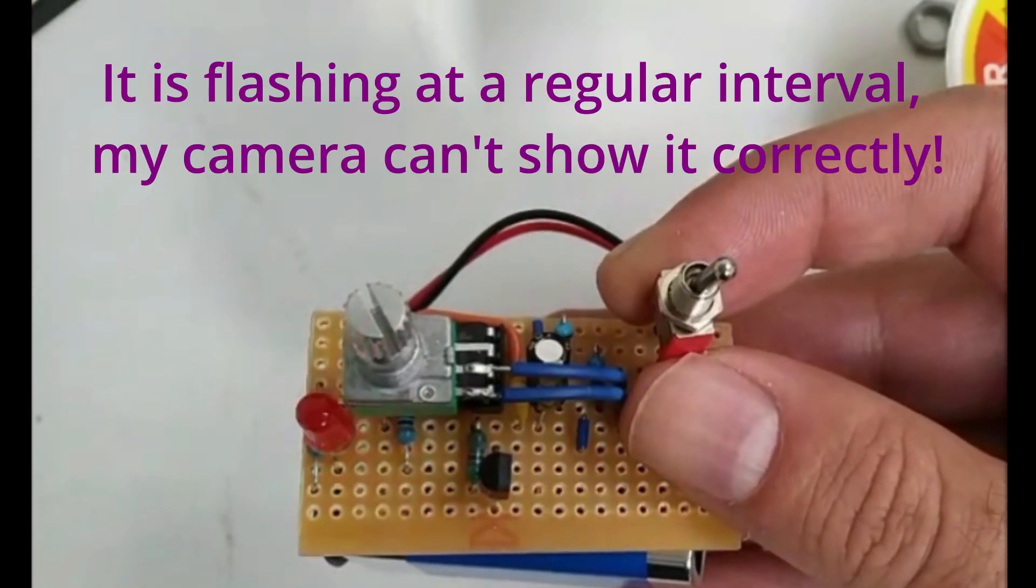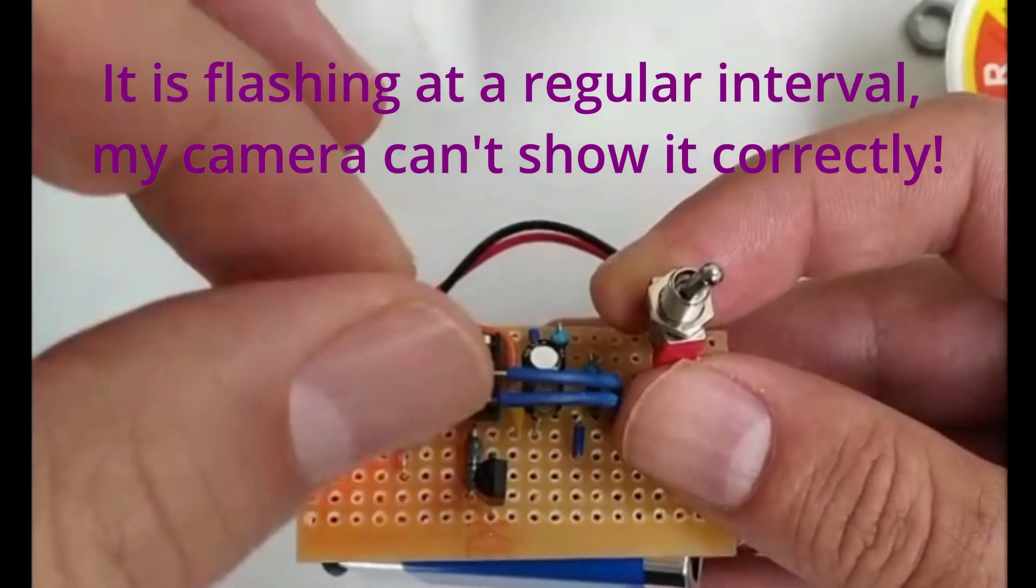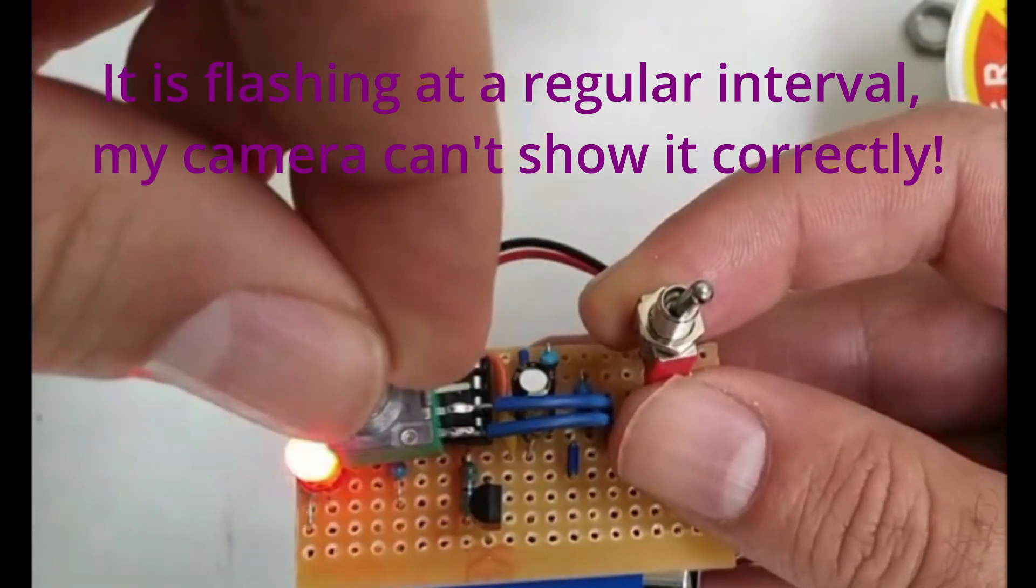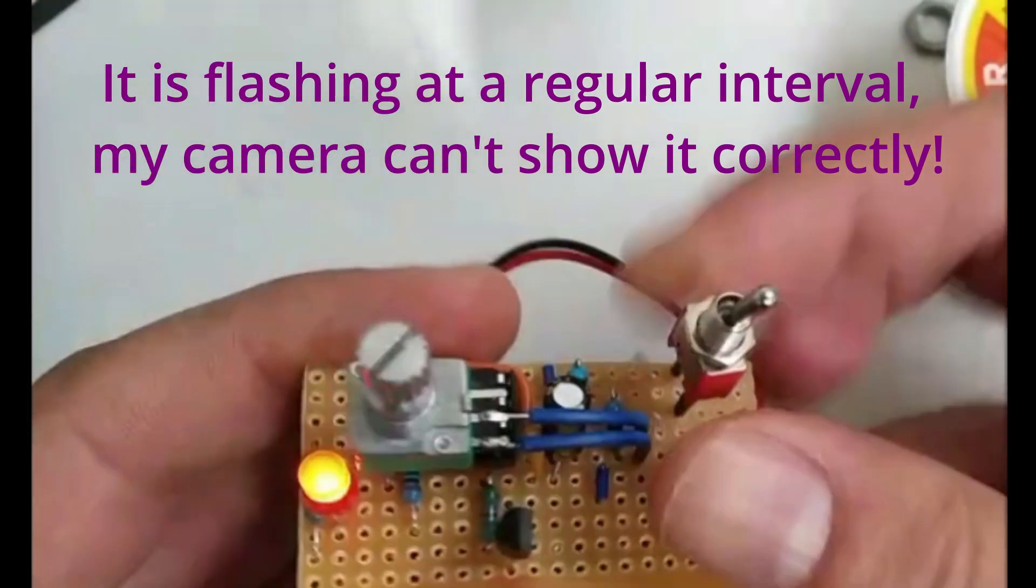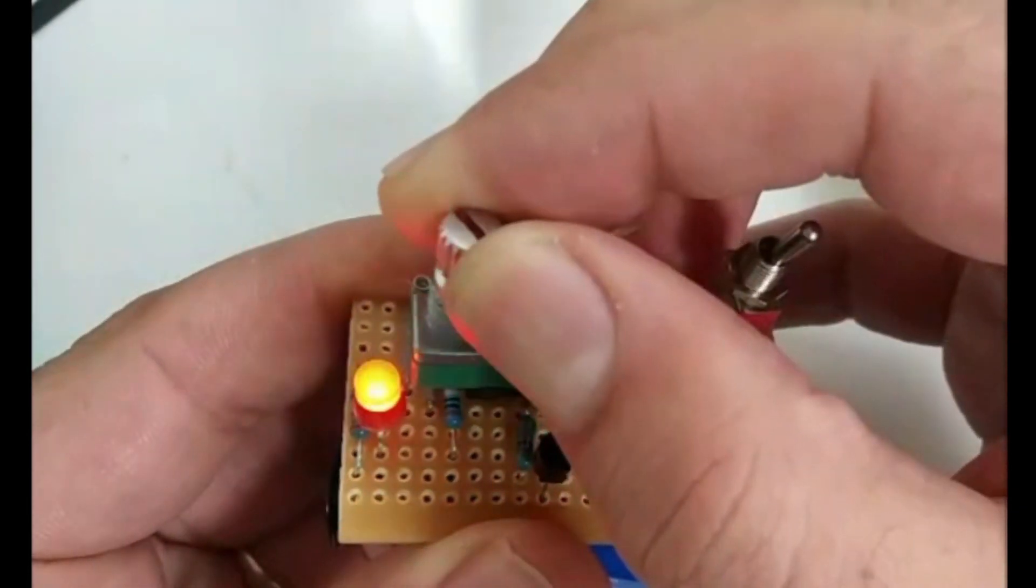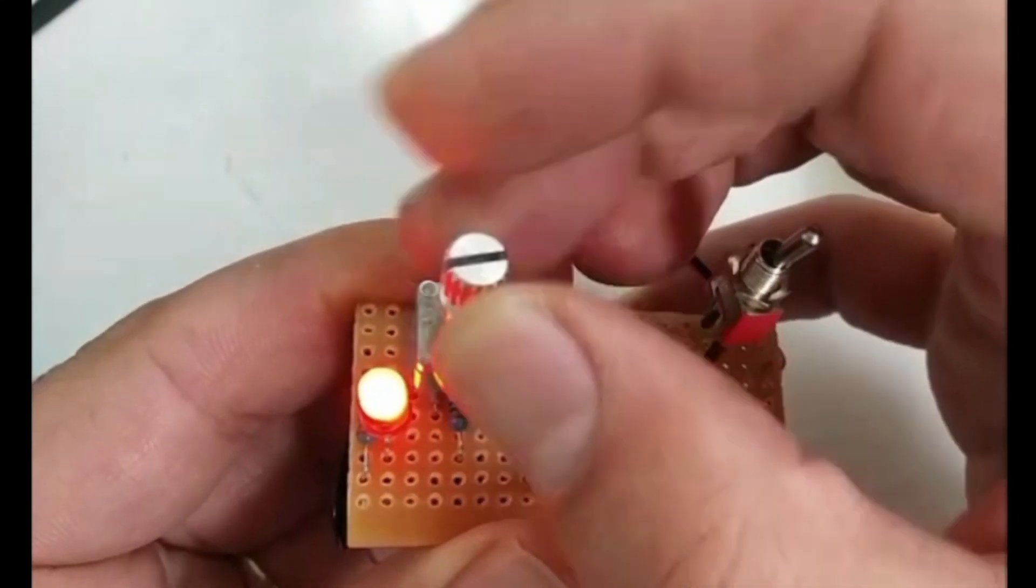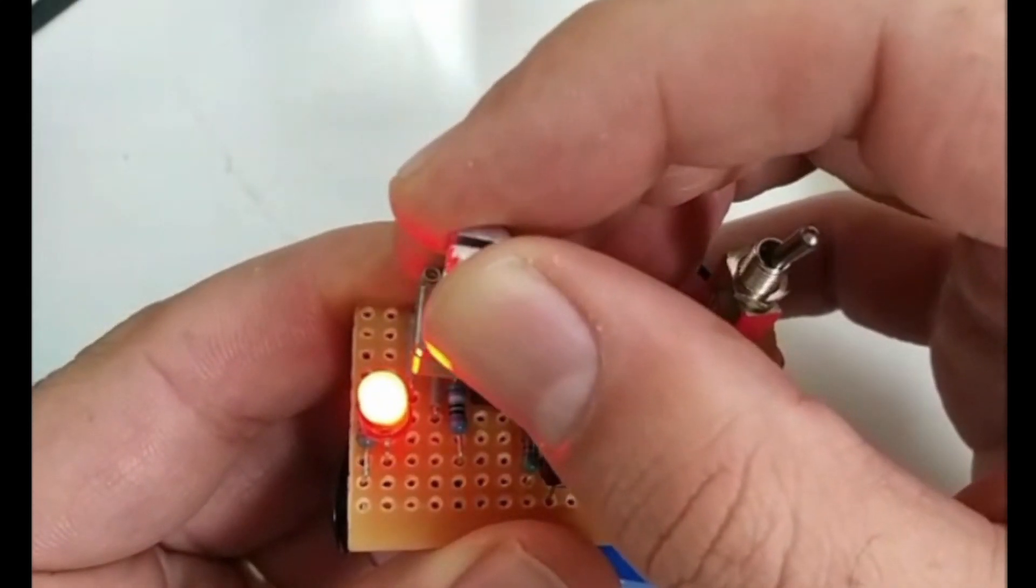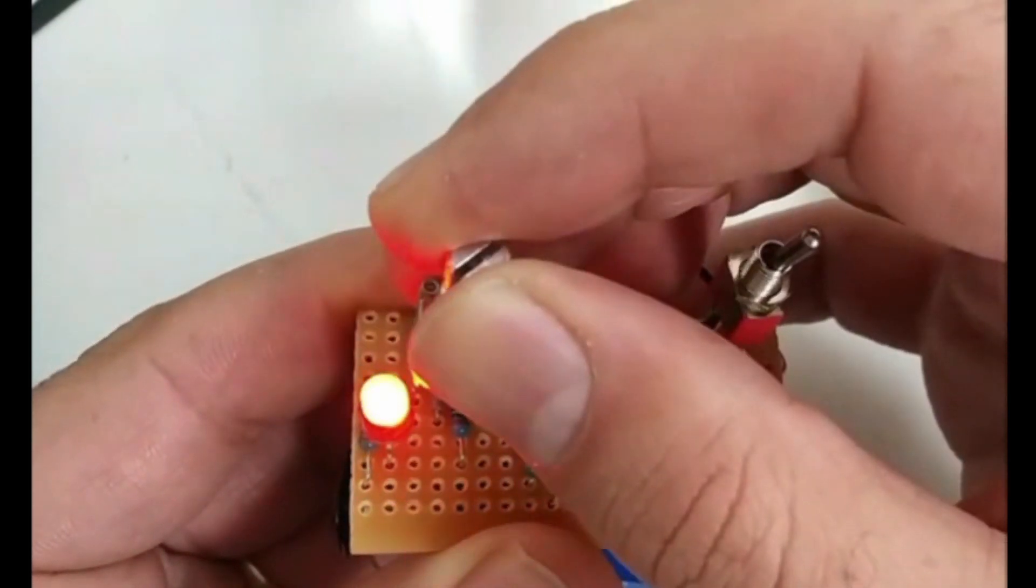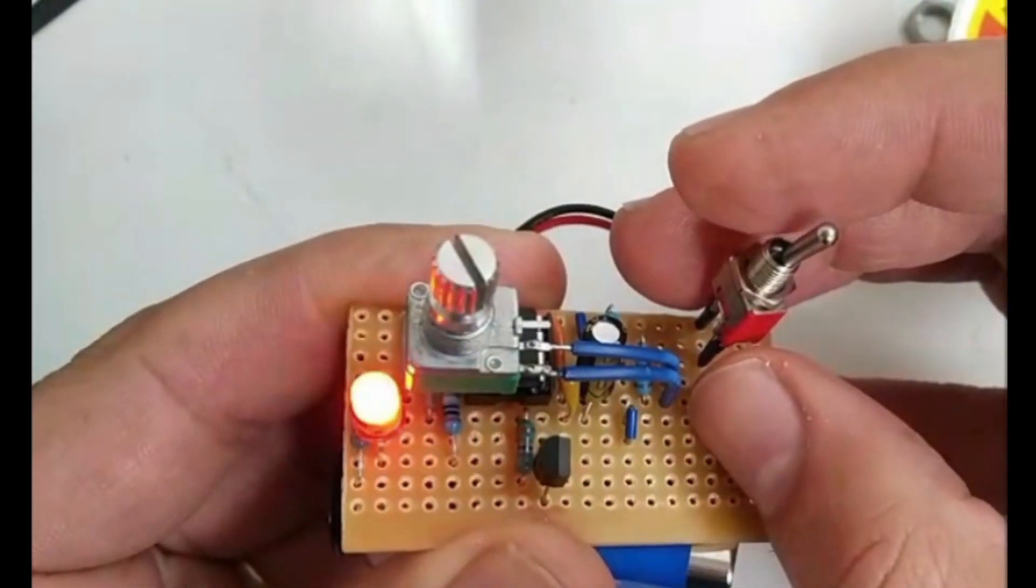There you go. There it is flashing at the moment, probably about six times a second. So let's turn this on and change the variable resistor. Let's do it on this hand. It should be flashing faster and faster. And you can almost can't see it flashing there. I'll start slowing it down. And there you go.